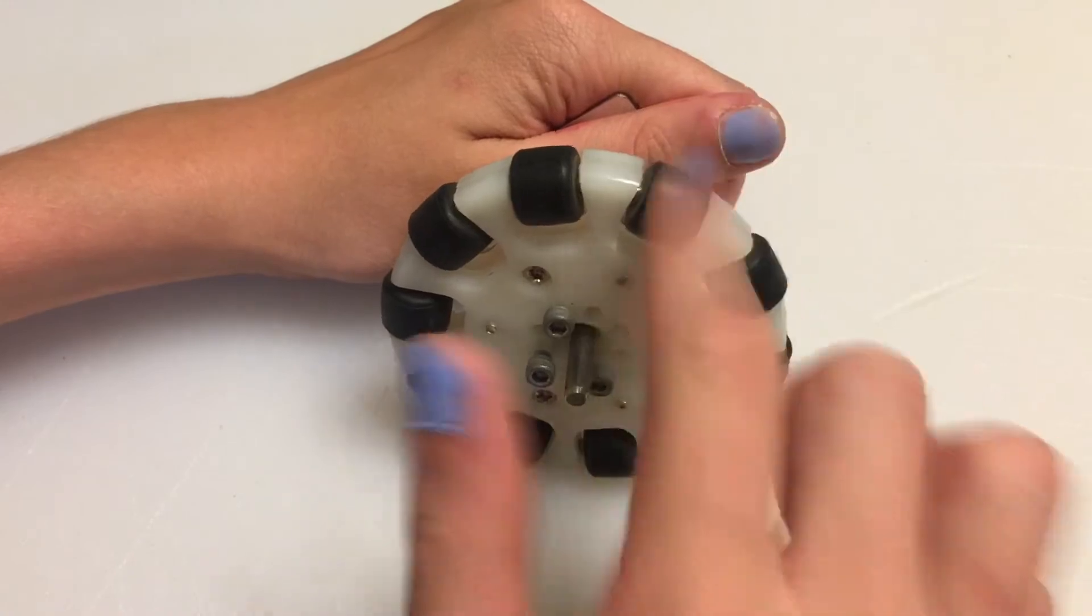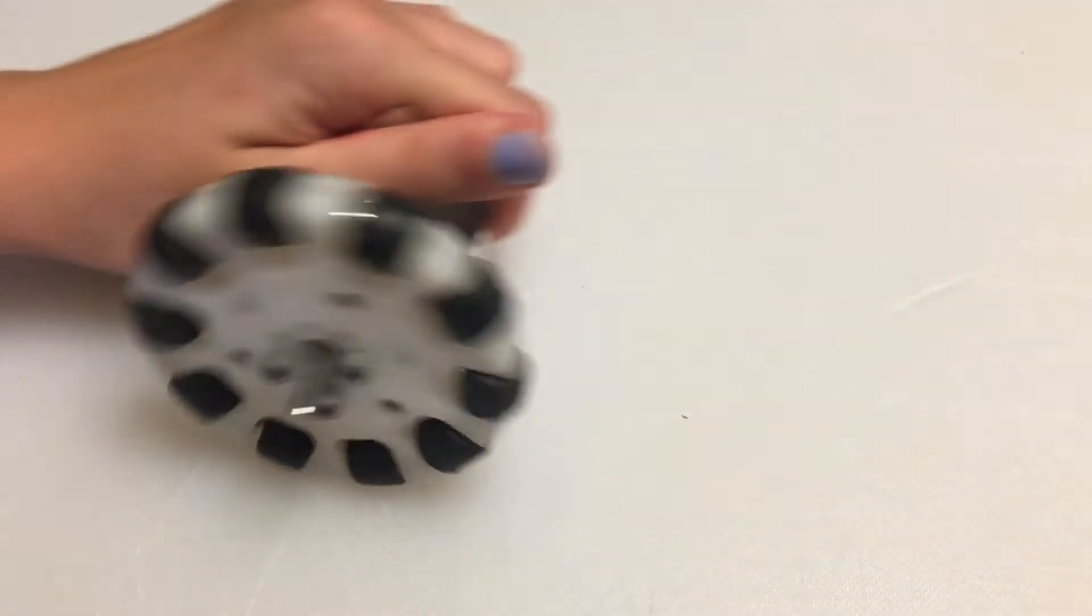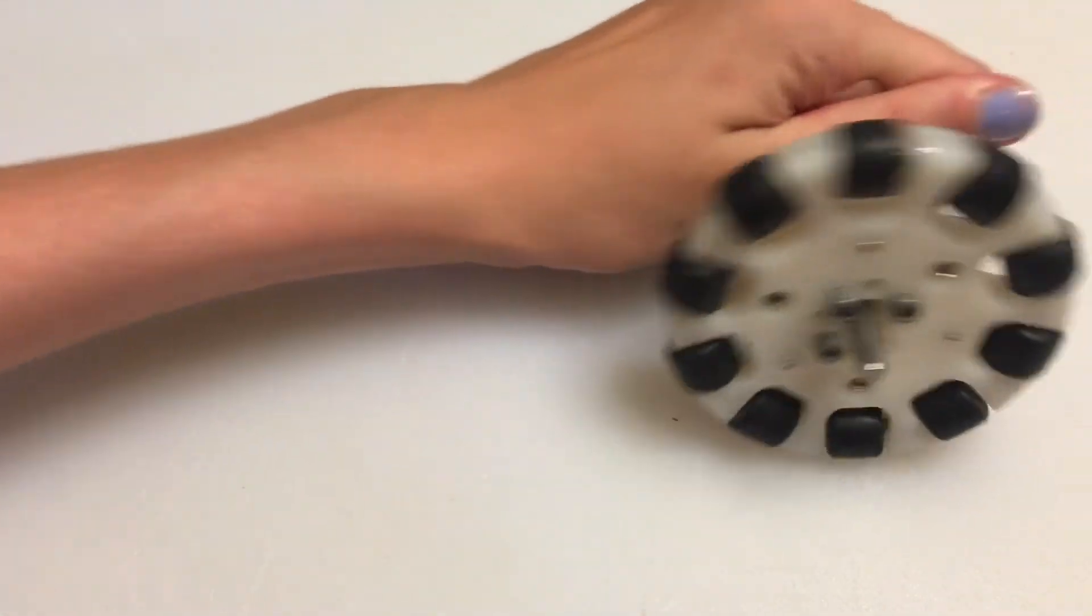Omni wheels have small rollers on them that let the main wheel slide sideways with little friction. Thanks to the LazyBots for the inspiration.